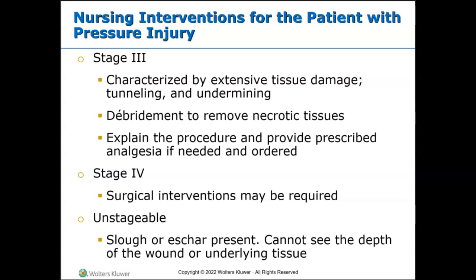Stage three is full-thickness skin loss with subcutaneous fat exposed, but not muscles, bones, or tendons — that is stage four. Stage four is when, instead of seeing only subcutaneous fat, we see muscles, bones, and tendons. These are important distinctions between the two stages.